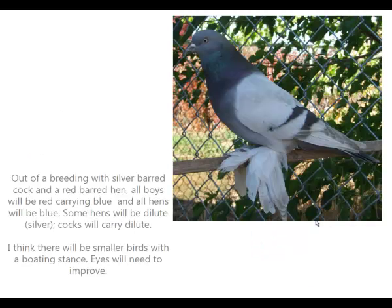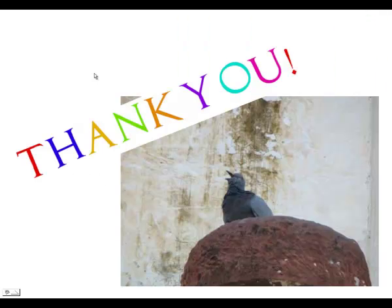Out of a breeding with a silver-barred cock and a red-barred hen, all boys will be red carrying blue, and all hens will be blue. Some hens will be dilute like their father — silver — and cocks will carry dilute. I think there will be smaller birds with a boating or hunkering stance. Eyes will need to improve. Thank you for being patient and watching my slides, and good luck on yours.